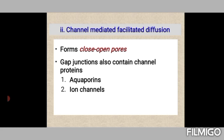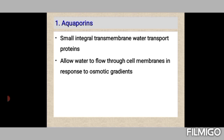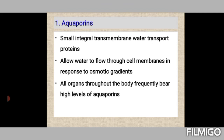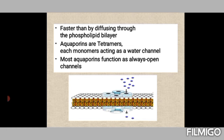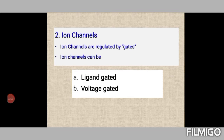Channel-mediated facilitated diffusion involves channels that can be imagined as tunnels which can be opened or closed as conditions require. There are aquaporins and ion channels. Aquaporins are protein carriers exclusively meant for transport of water molecules. They are tetrameric proteins that transport water in response to osmotic gradients, present in almost all glands and organs. Aquaporins are faster than diffusion in carrying water molecules and will be discussed further in future lectures.